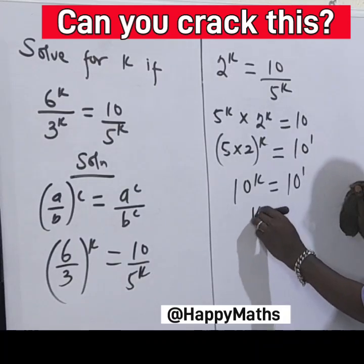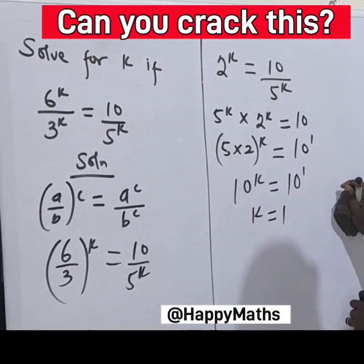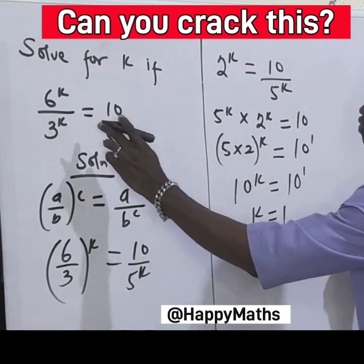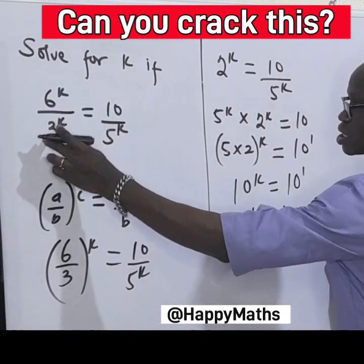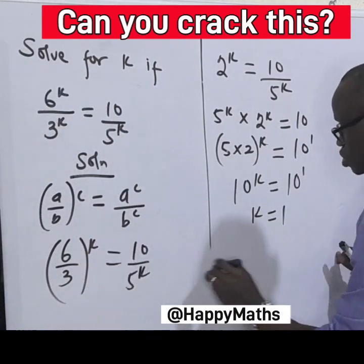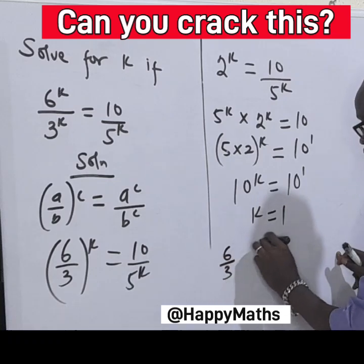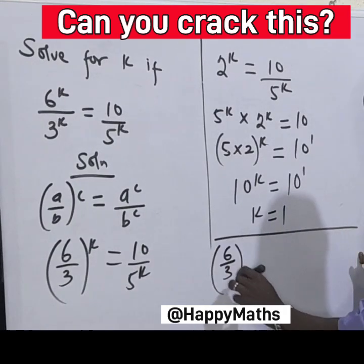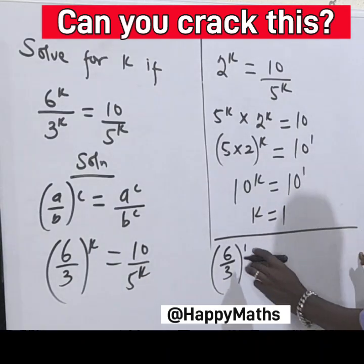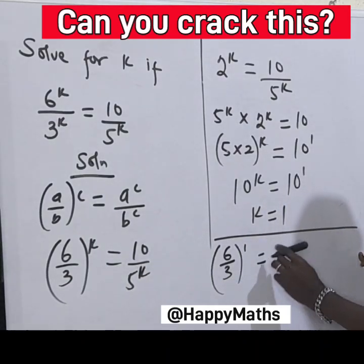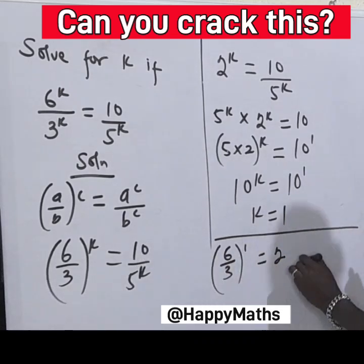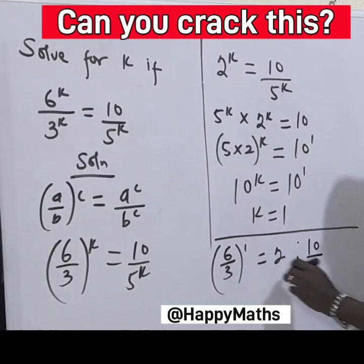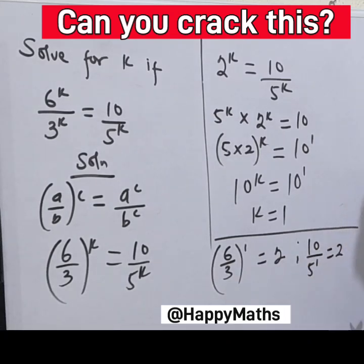Since the bases are common, we have 10 raised by k equals 10 raised by 1, therefore k equals 1. Let's do a quick check — substituting k equals 1: 6 over 3 raised by 1 gives you 2. And 10 over 5 raised by 1 also gives you 2. Which means the answer is correct.